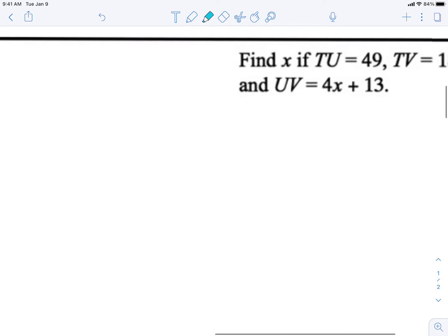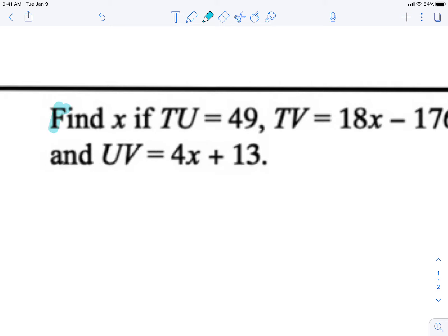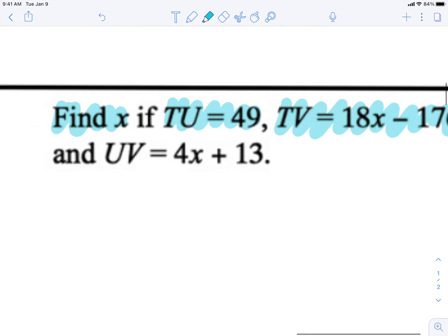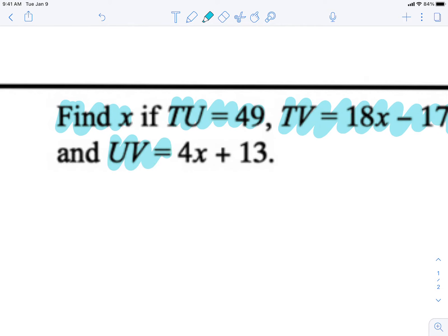So let's substitute now. What information do they give us in the problem? We need to find x if TU is equal to 49, TV is equal to 18x minus 176, and UV is equal to 4x plus 13.